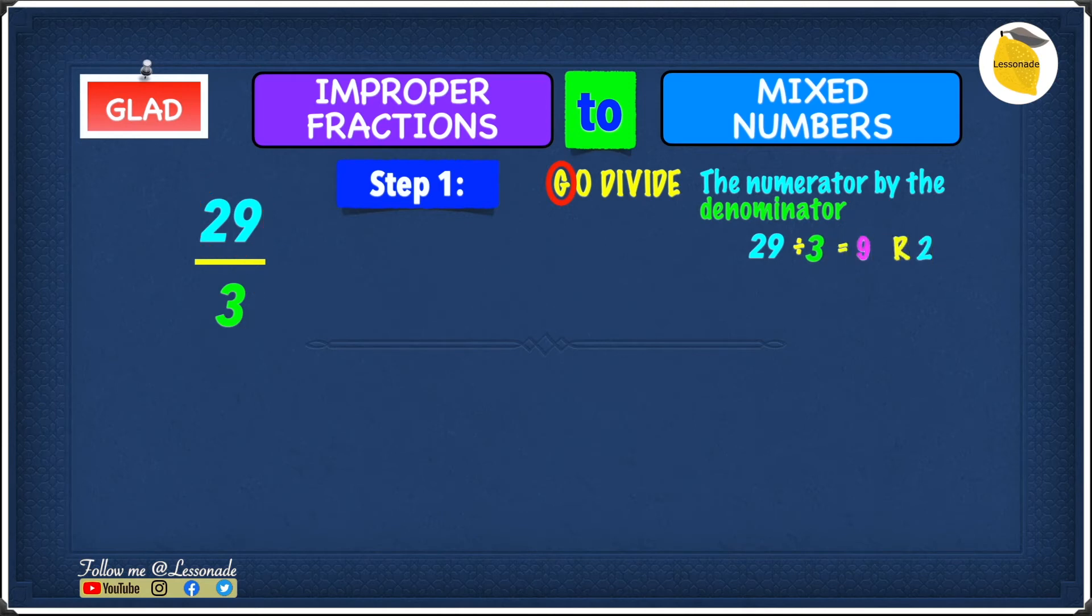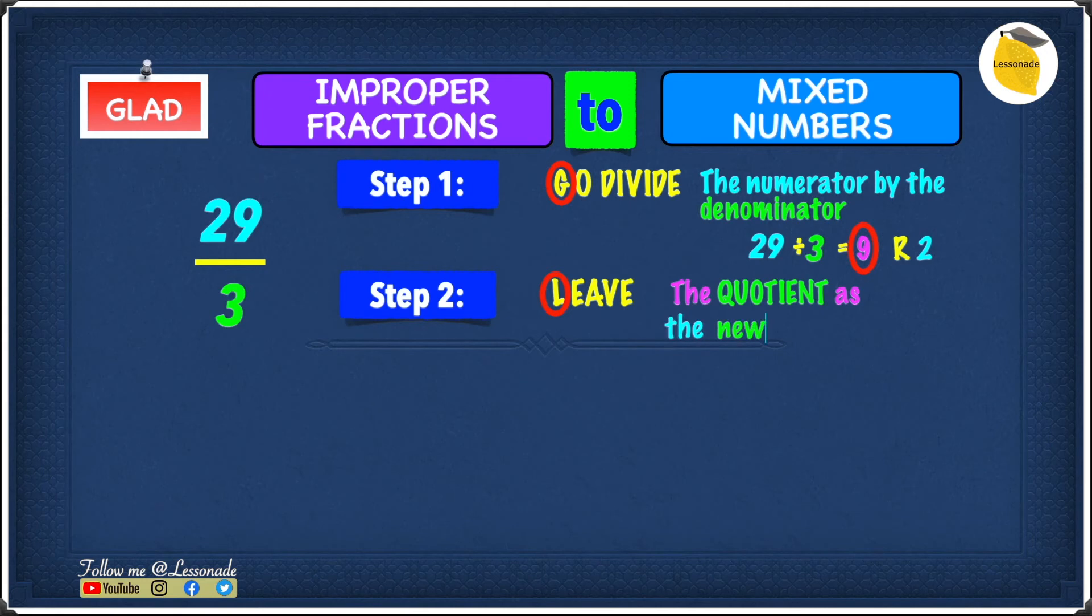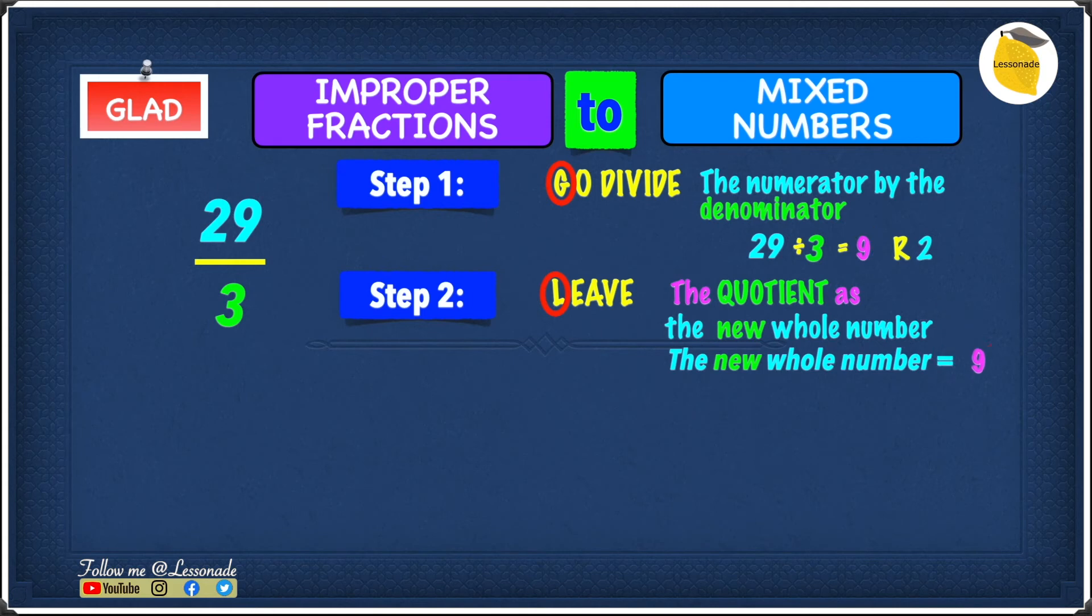So now let's move into step 2. In step 2, we have L, and L is leave the quotient, which is 9, as the new whole number. Which means the new whole number will be the quotient and the quotient is 9. Since we now know the whole number, we can write it down.